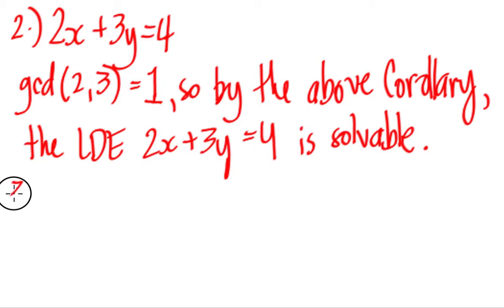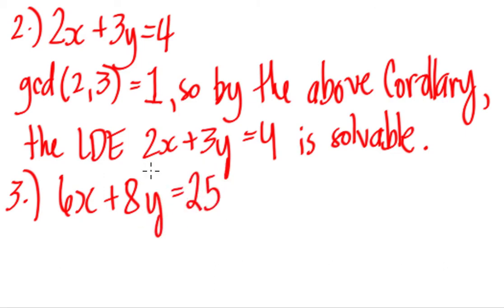Now for number 3. Number 3, recall that we are given the equation, the linear diophantine equation 6x plus 8y equals 25. We can see that the GCD of 6 and 8, 6 is 2 times 3, 8 is 2 times 2 times 2. So the common number there is only 2. That's their greatest common divisor or common factor.